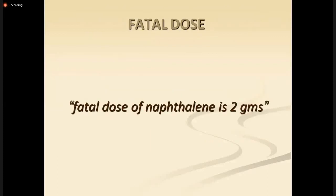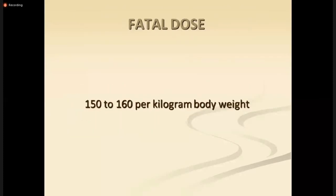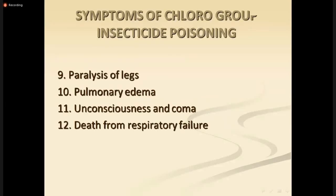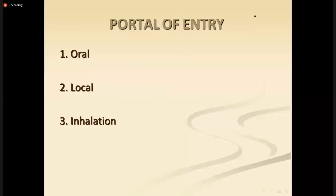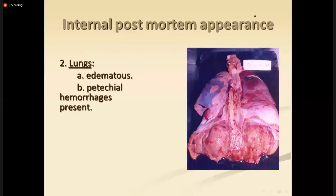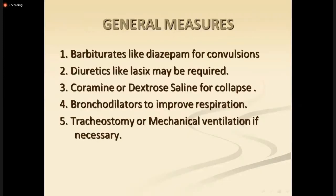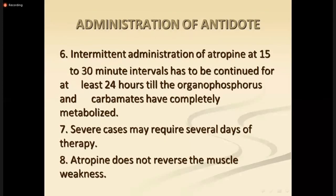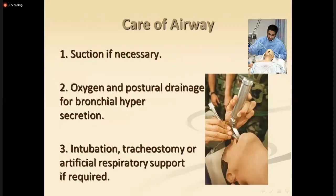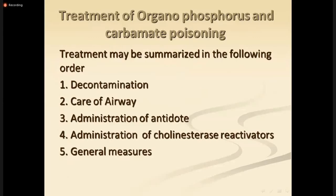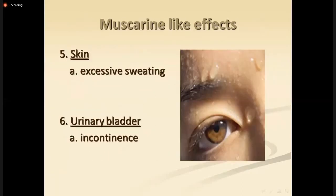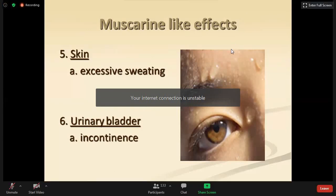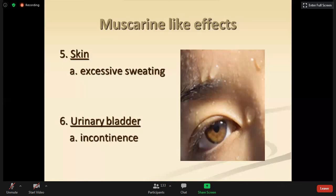This concludes the lecture on agrochemical poisoning. We have dealt with organophosphorus, carbamate, chlorinated insecticides including DDT and endrin, naphthalene, and aluminium phosphide. If you have any queries you can ask; otherwise, you can review the slides or use the mnemonics for muscarinic and nicotinic effects to revise.